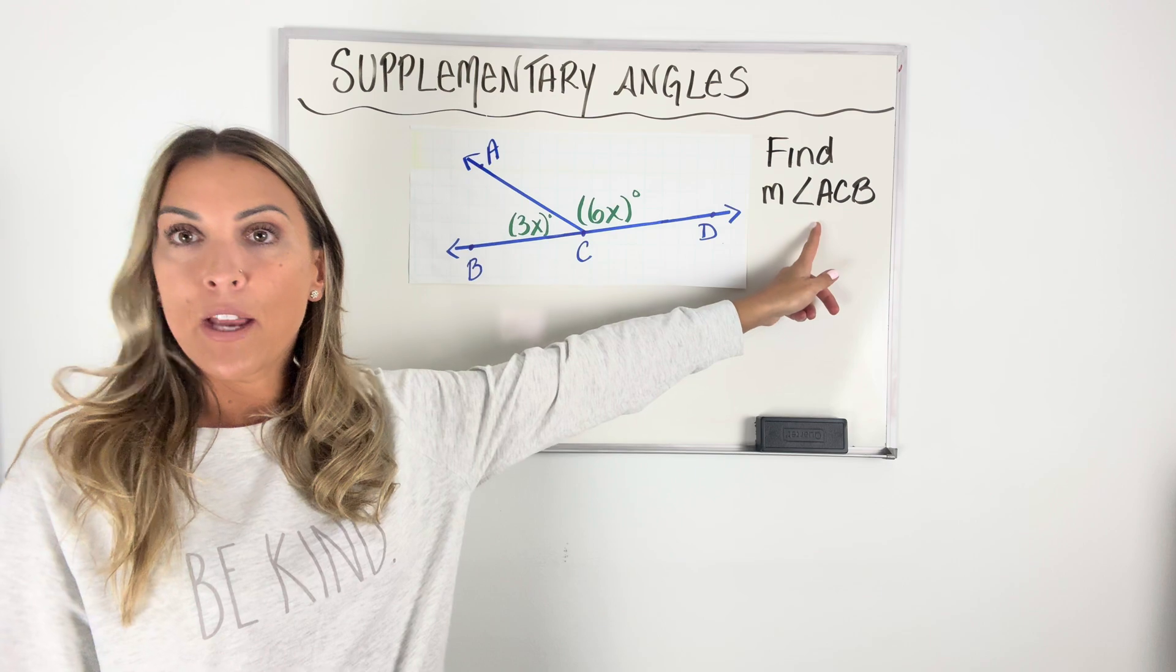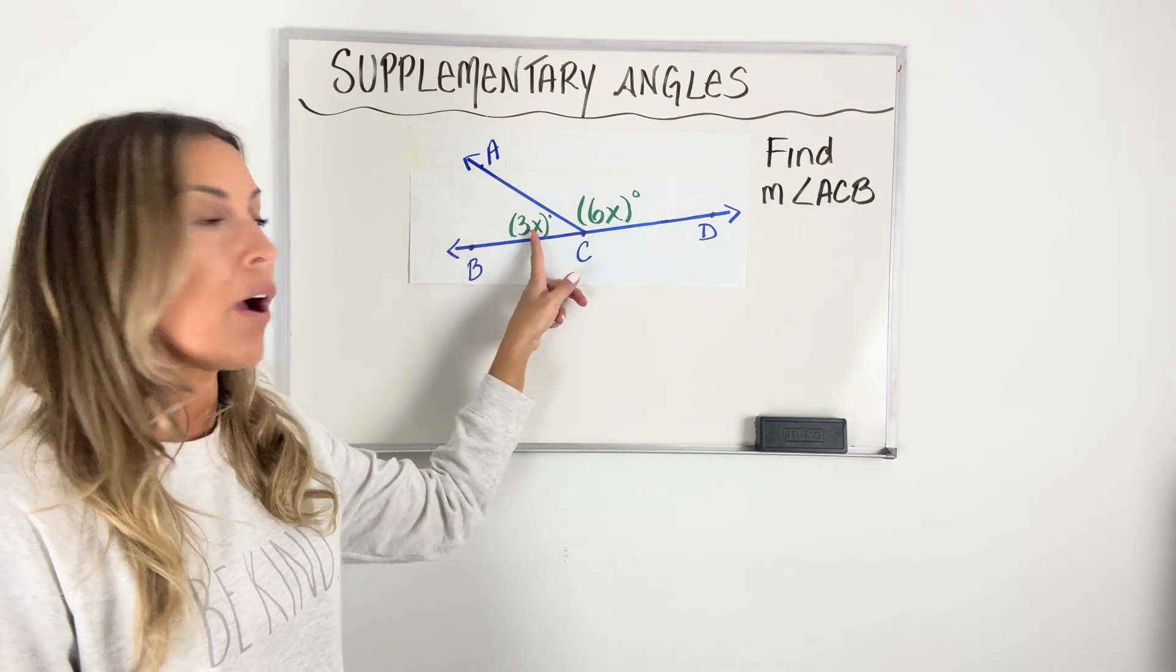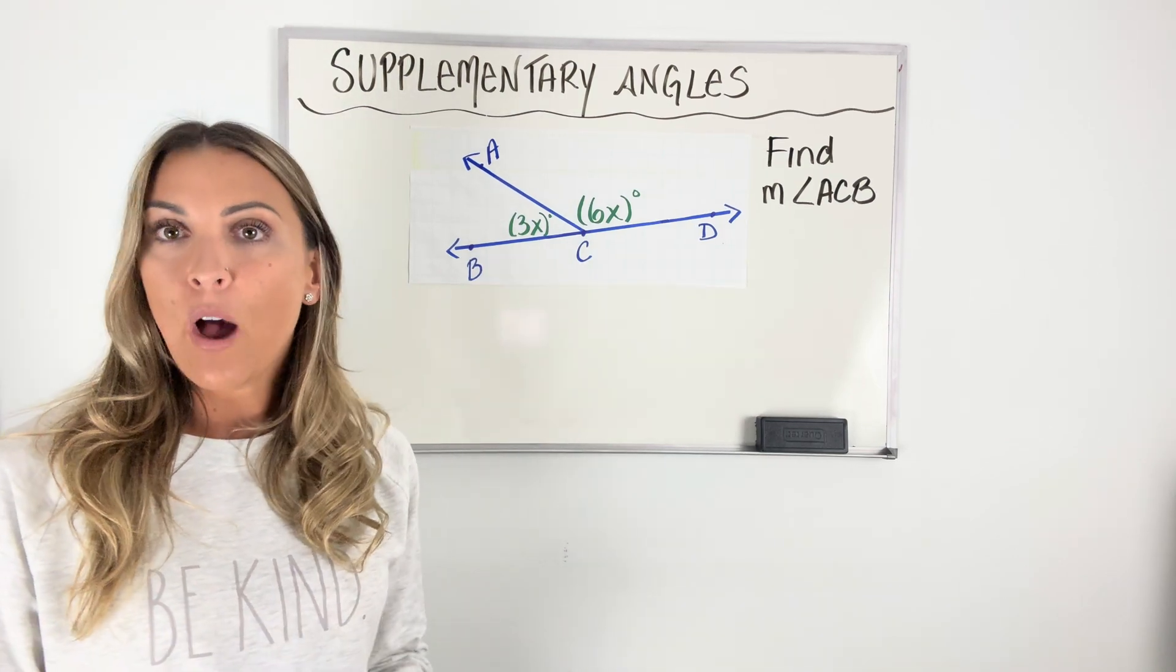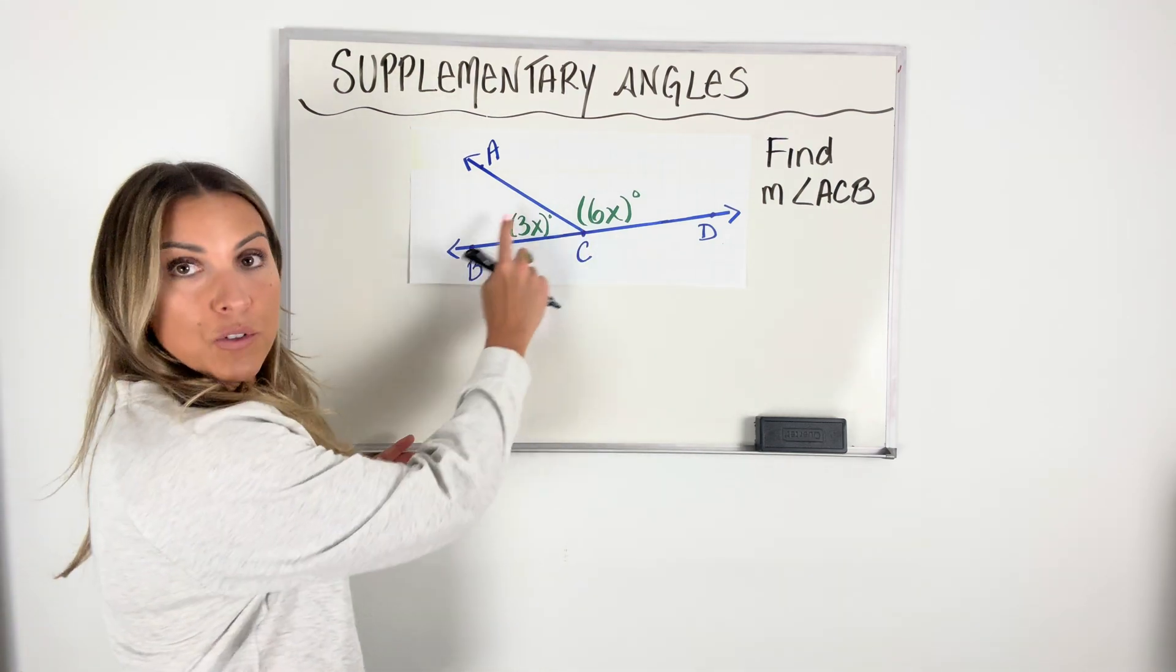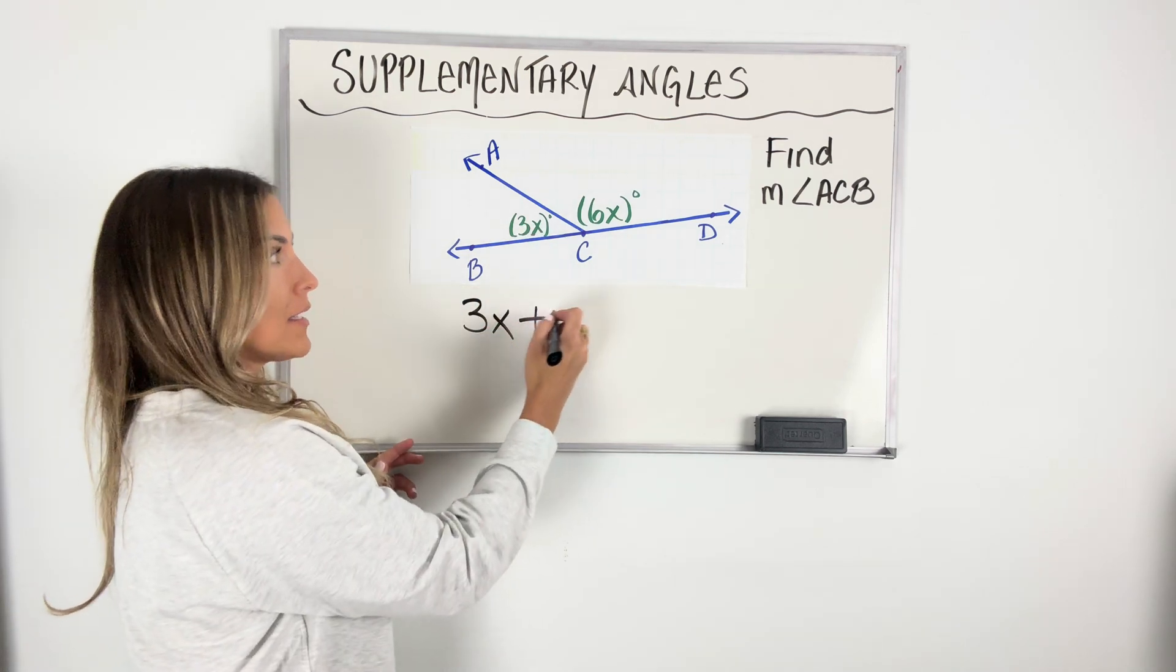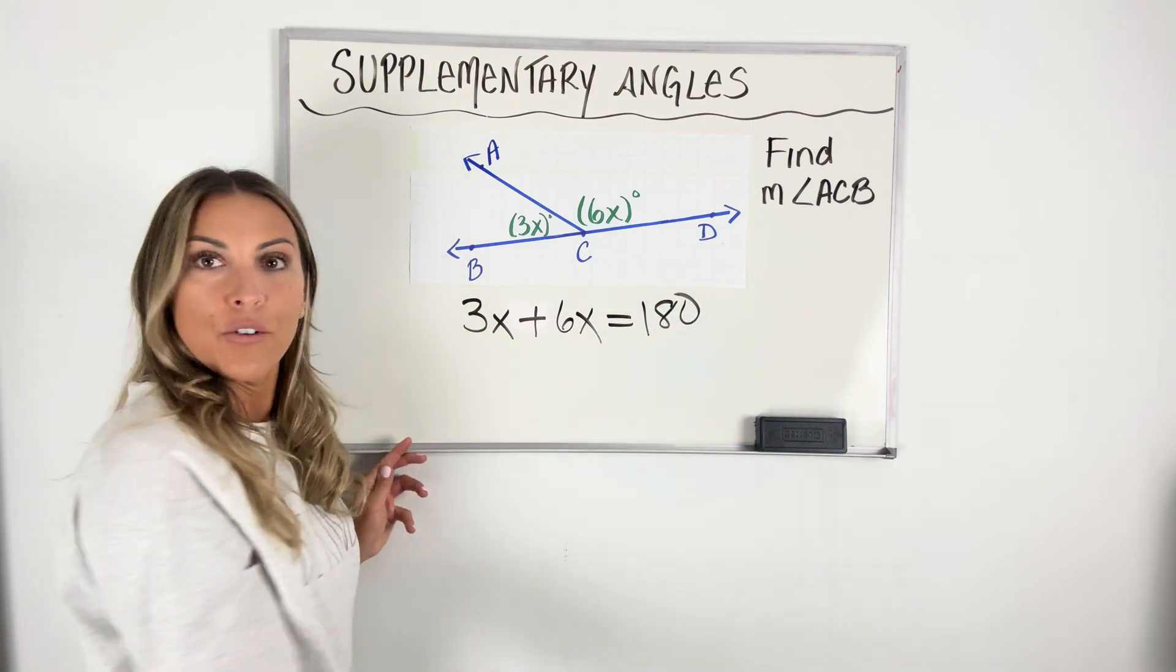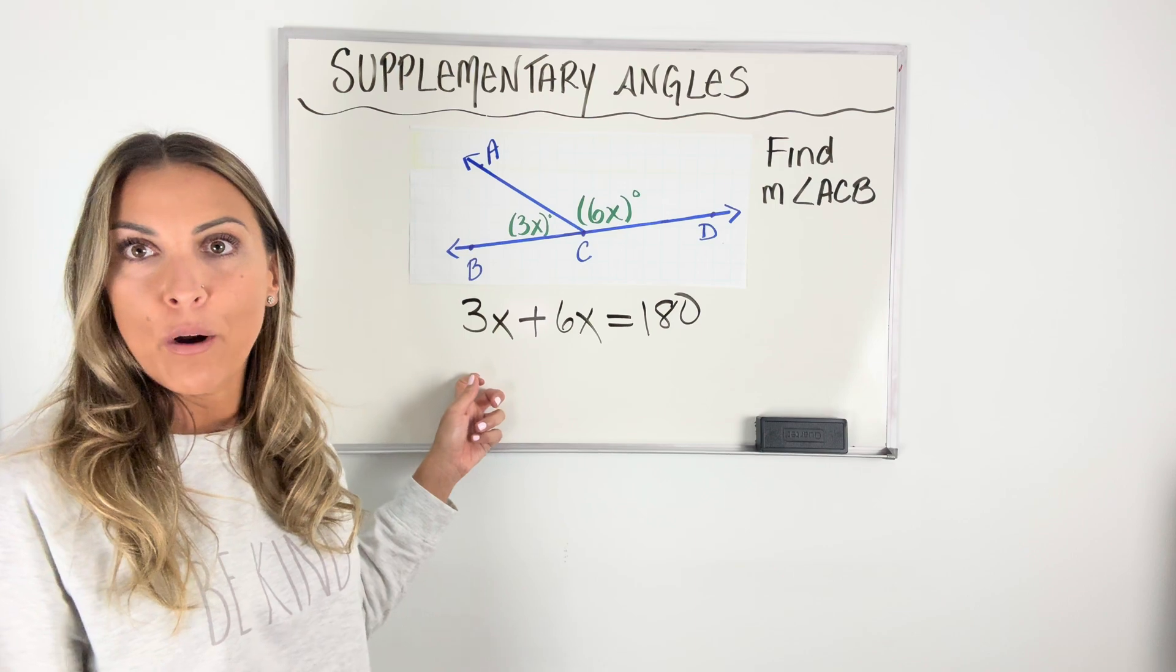So if I was trying to find the measure of angle ACB, the first thing I need to do is figure out what X is. The way I'm going to do that is to build an equation. So how can I build an equation with the picture I'm given? Well, I know that these two angles are supplementary, that they add up to 180 together. So I'm going to go ahead and write that equation. This first angle plus that second angle together equal 180 degrees. If you can come up with that equation, you're done with probably the hardest part of these problems.